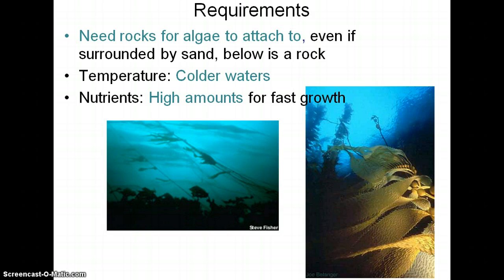Requirements that kelp need to grow: they need rocks or some sort of hard surface to attach to. Even if they're surrounded by sand, if there's a rock in the middle, that kelp can attach to it. They need cold waters and they need a lot of nutrients. Macrocystis can grow two feet a day, so they need lots of nutrients in order to grow that fast. Nutrient-rich, cold water with a hard surface to attach to — that's what they need.